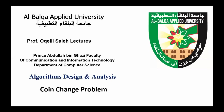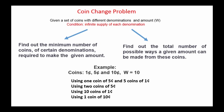Welcome again. Today, our topic in the Algorithms Design and Analysis course is the Coin Change Problem. The general statement is: given a set of coins with different denominations and an amount W, provided that we have an infinite supply of each denomination, we have to find the minimum number of coins of certain denominations required to make the given sum. This is the first version of the problem.